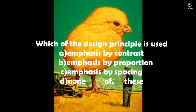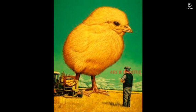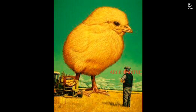The first question asks which design principle is used. The options are: emphasis by contrast, emphasis by proportion, emphasis by spacing, or none of these. In this figure, a duck's size would normally be very small compared to a man, but the observer's eye is directly focused on the duck, not the man. The artist uses proportion to focus attention, so this picture uses emphasis brought out by exaggerating proportion.